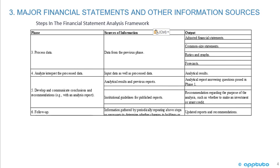For step three — process data — the sources of information are the data collected in the previous phase. The output might include adjusted financial statements, common size statements, ratios and graphs, and forecasts.